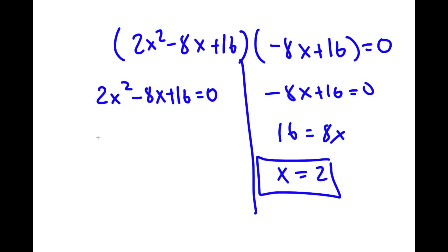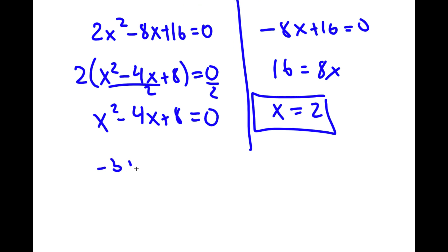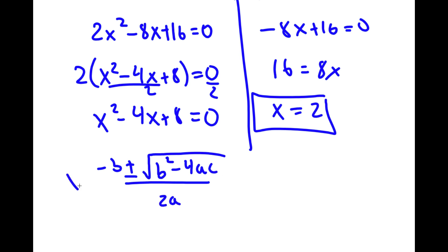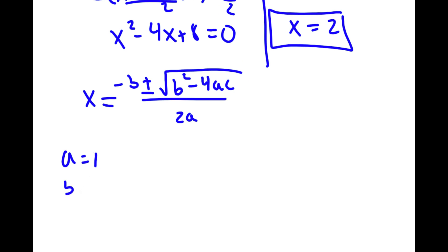For 2x squared minus 8x plus 16 equals 0, I'm going to first factor out 2, so I get 2 times x squared minus 4x plus 8 is equal to 0. Dividing both sides by 2, I have x squared minus 4x plus 8 is equal to 0. To solve this, I'm going to use the quadratic formula: negative b plus or minus the square root of b squared minus 4ac, all over 2a. In this case, a is 1, b is negative 4, and c is 8.